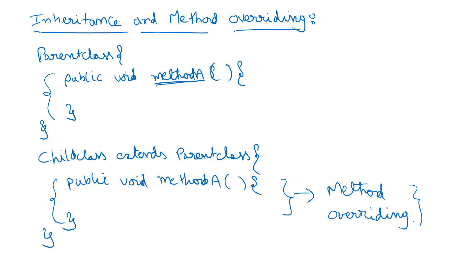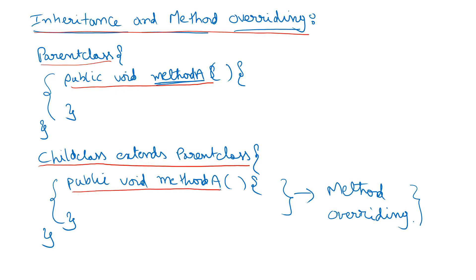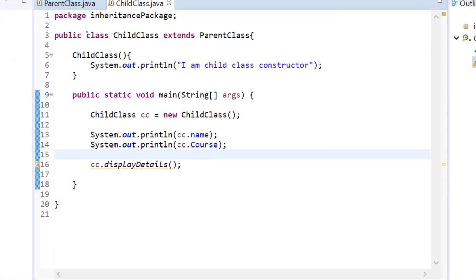Let's see one more time. I have two classes — one is parent class and another one is child class which is extending the parent class. The parent class contains a method which is method A, and in the child class we are declaring the same method again, but the implementation might be different — this is called method overriding. Don't get confused with method overriding and method overloading. Overloading is declaring two or more methods with the same name but with different return types in the same class. Method overriding is a concept of inheritance — the same method has to be declared in the child class as that of the parent class.